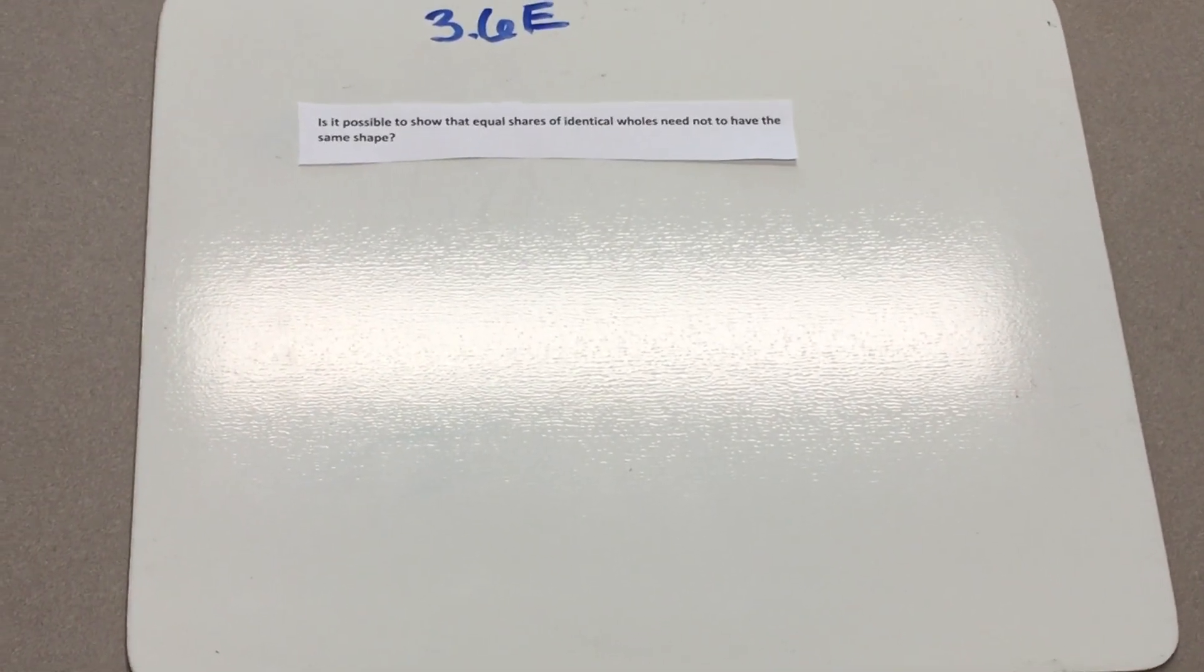Is it possible to show that equal shares of identical wholes need not have the same shape?